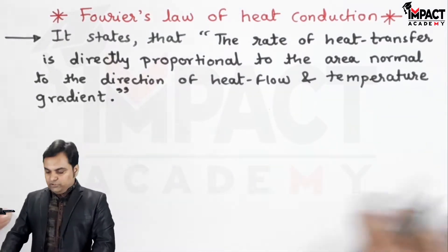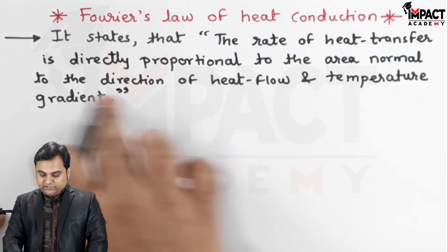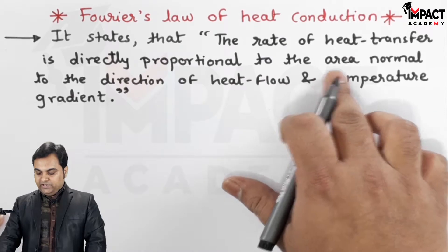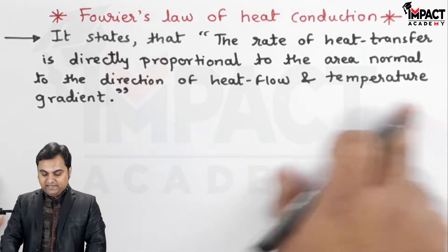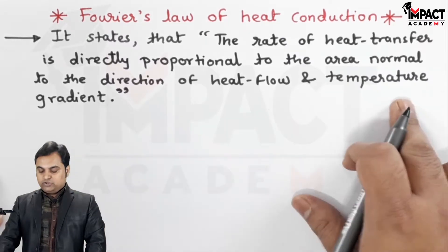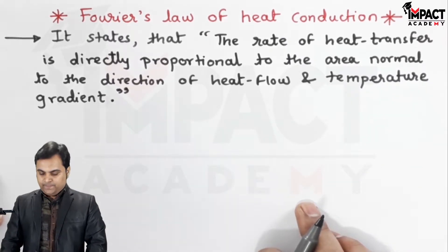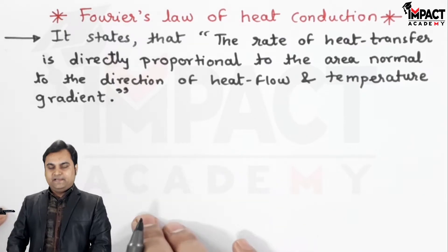This is the statement of Fourier's law. It states that the rate of heat transfer is directly proportional to the area normal, that is perpendicular to the direction of heat flow, and temperature gradient, that is the drop in temperature per unit length. In order to explain this law, first I'll draw the diagram.